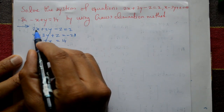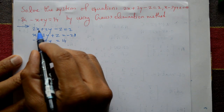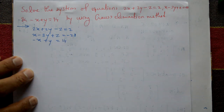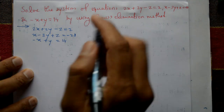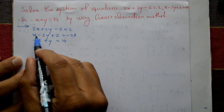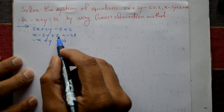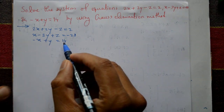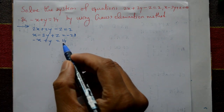The equations are: 2x plus 2y minus z is equal to 2; x minus 3y plus z is equal to minus 28; minus x plus y is equal to 14.